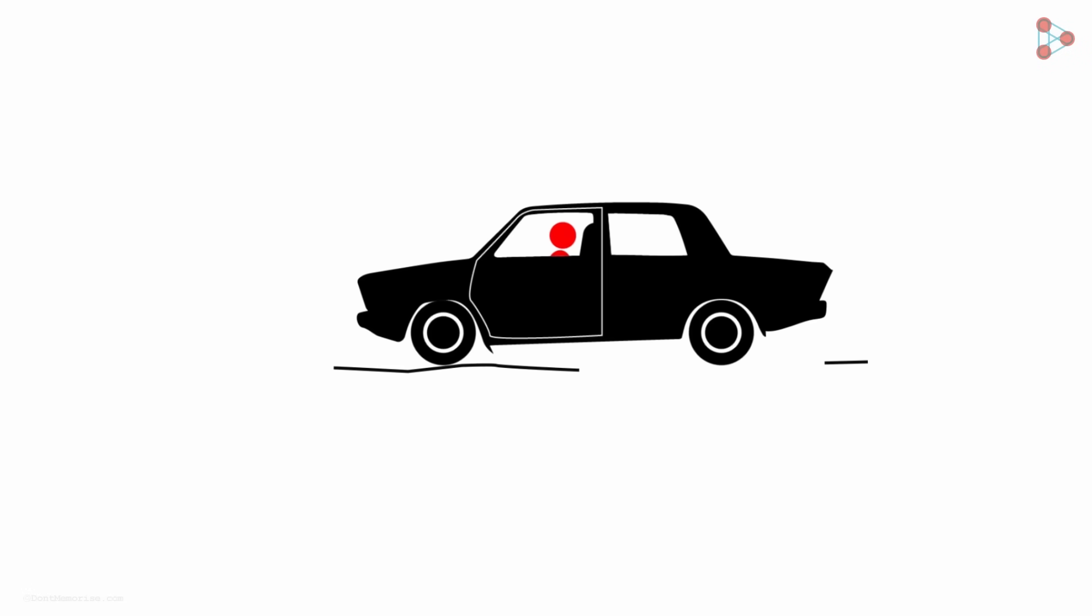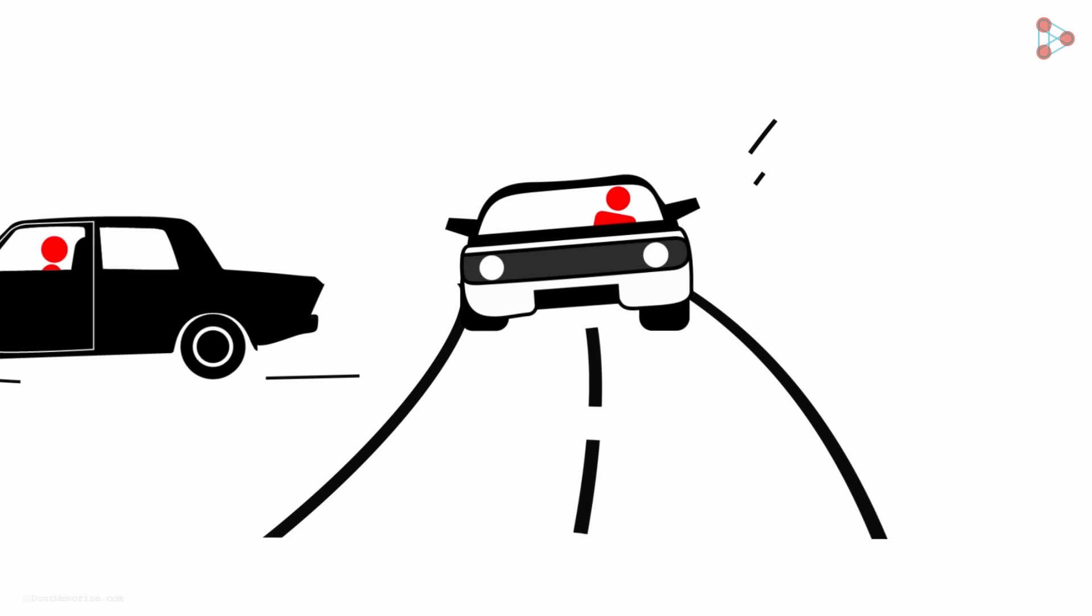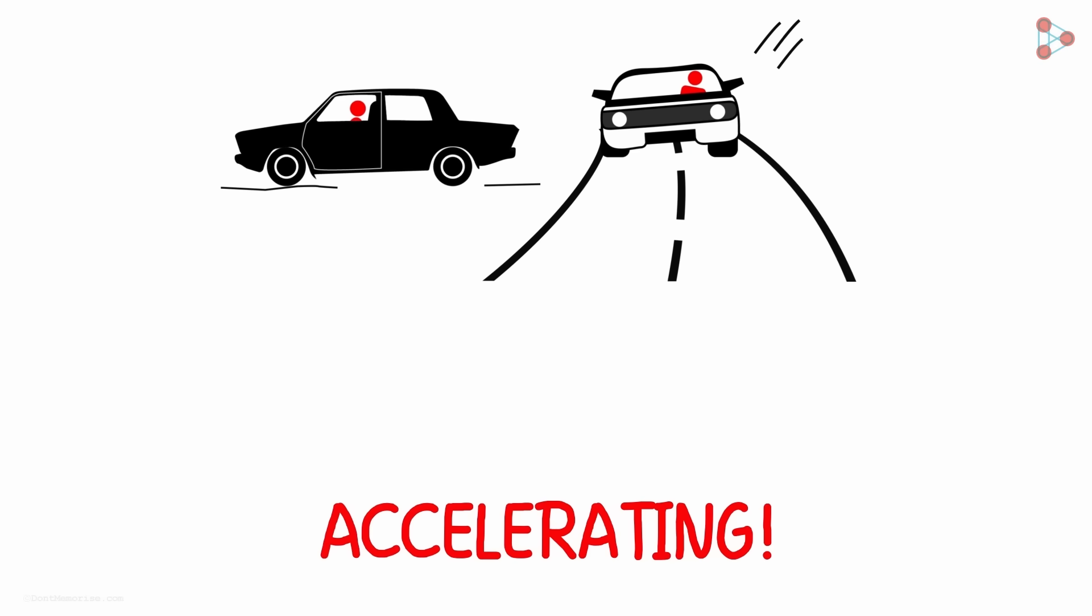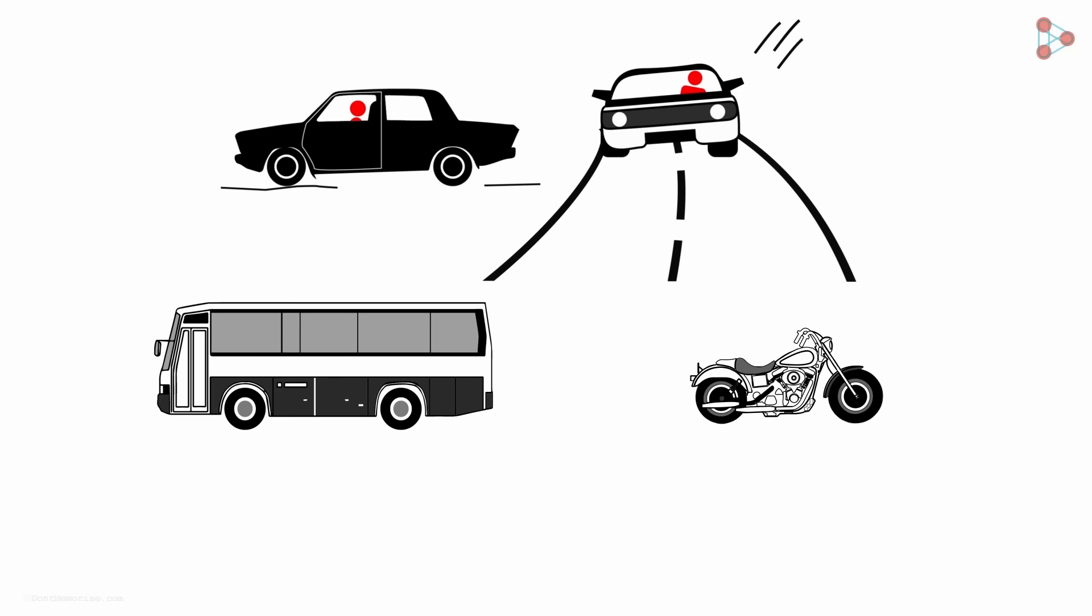When we are in a stationary car that moves rapidly to gain speed, we get pushed back against our seat. And when brakes are applied, we get pushed ahead. Or when we take a sharp right turn, we are pushed towards the left. These are all situations where we are accelerating. We have all experienced this whether in a car or a bus or while riding a motorbike.